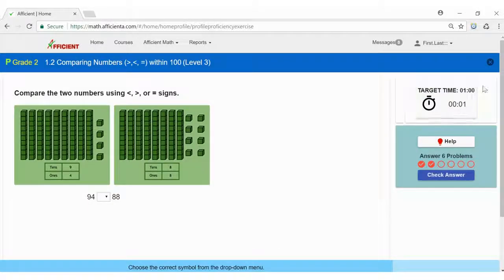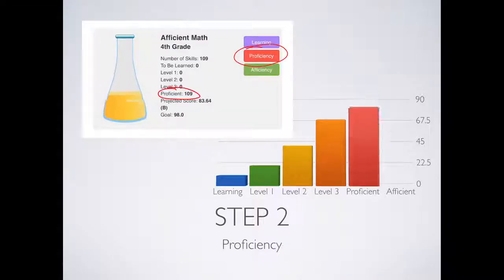A timer appears for all skills at level three. Once all the skills have been brought to proficient, you can start step three.